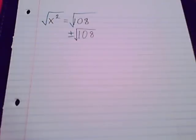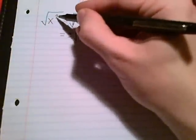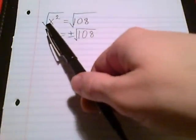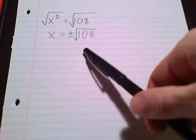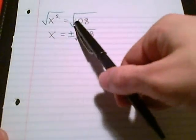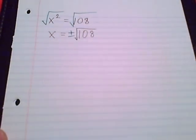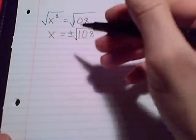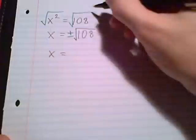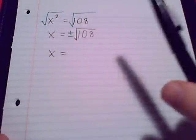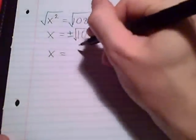The square root of x squared gives us x, and we need the square root of 108 on the right. The square root and square cancel, leaving x. Since we're taking square roots, the result could be positive or negative — we must account for both. The answer is x equals positive or negative the square root of 108, but we should simplify that radical, just like we simplify fractions. All radicals must be simplified.